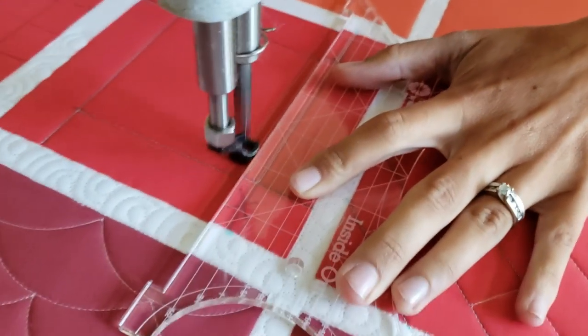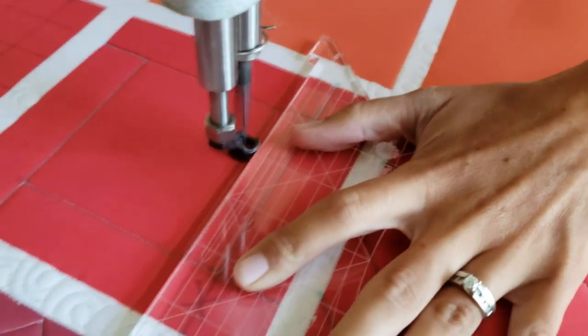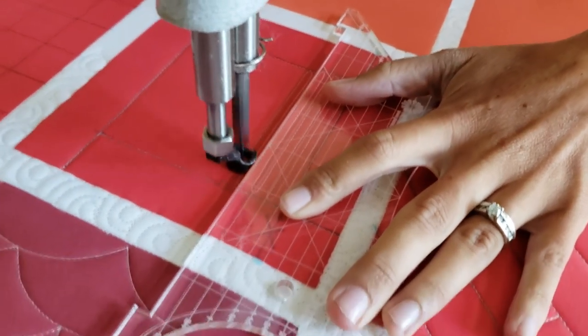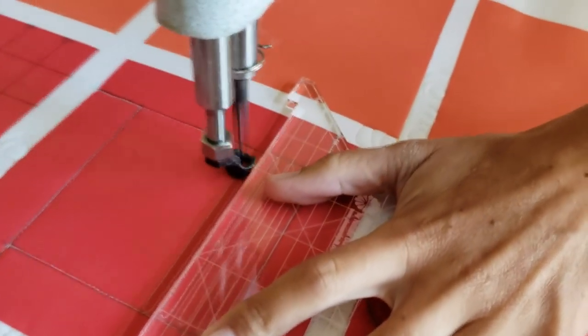After I've marked those lines, I'm going to go through and stitch along those lines, so there will be some backtracking that I do with this design. I'll stitch on all four lines all the way around the block.